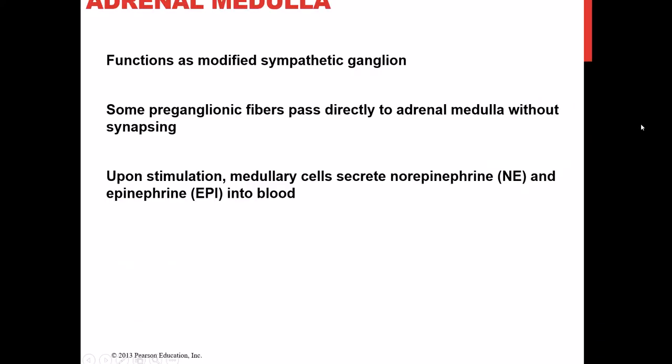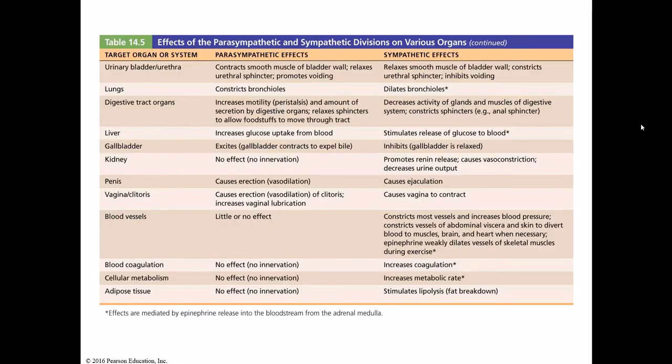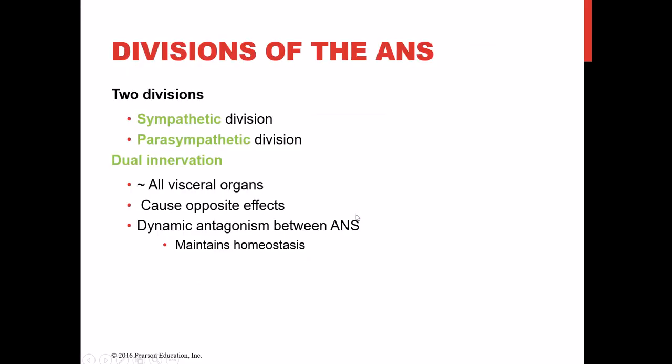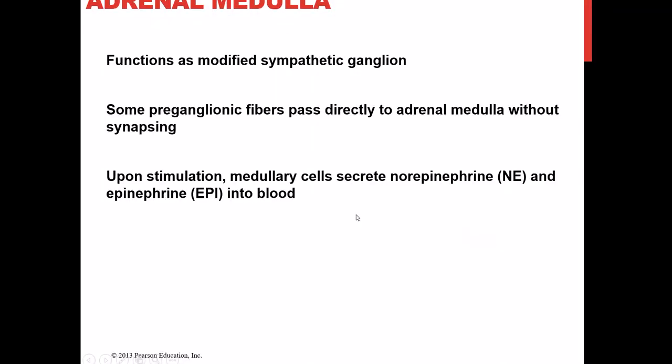The adrenal medulla is part of the sympathetic nervous system and takes the place of the ganglion in this particular sympathetic route. The adrenal medulla secretes epinephrine and norepinephrine directly into the blood, so they function very similarly to hormones. Epinephrine is what we sometimes refer to in everyday language as adrenaline.